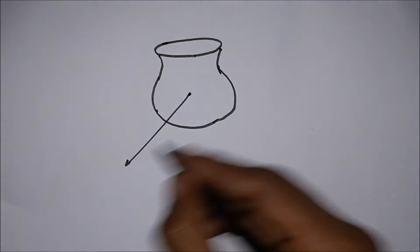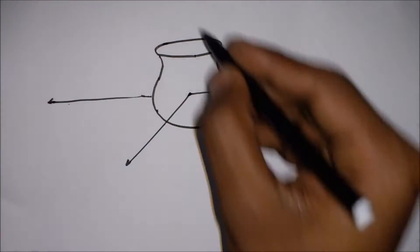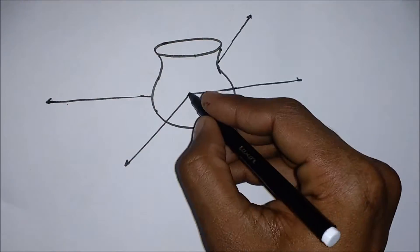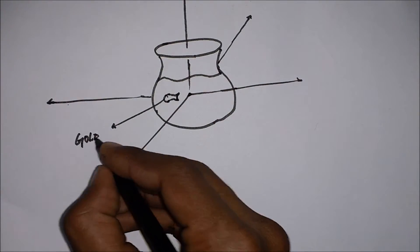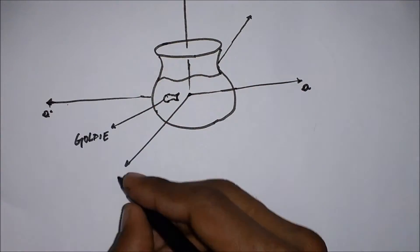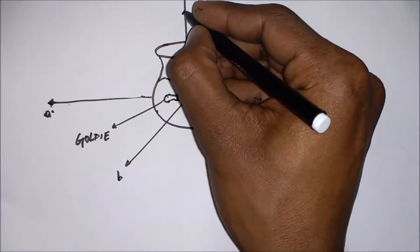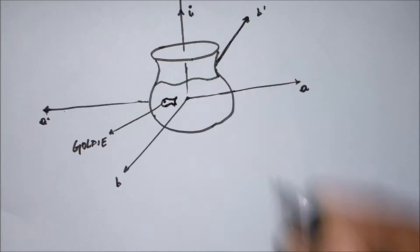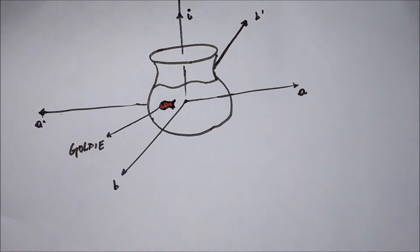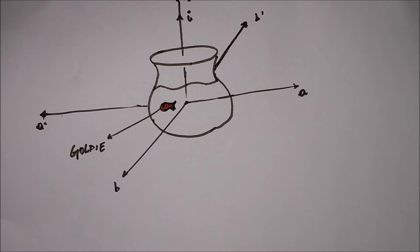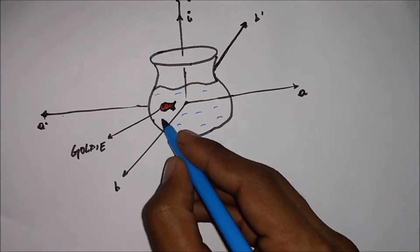The way we visualize the space around us has been continuously evolving. To understand this, let us start with Goldie. Goldie is a fish living in a jar in John's house. It can move in the AA' direction and BB' direction, but the idea of moving out of the jar is alien to Goldie. Hence, we can say that Goldie perceives space around it to be two-dimensional.